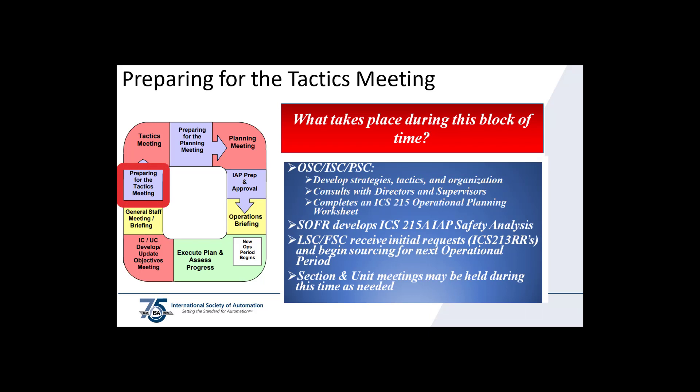Your team will be preparing for the tactics meeting. During this block of time, the operations section develops strategies, tactics, and organization, consults with directors and supervisors, and completes an ICS-215 operational planning worksheet. The safety officer develops the ICS-215A, the incident action plan safety analysis. Logistics and finance receive the initial ICS-213Rs, resource request forms, and begin sourcing necessary resources for the next operational period. Section chiefs and unit leaders may have meetings with their subordinates as needed.